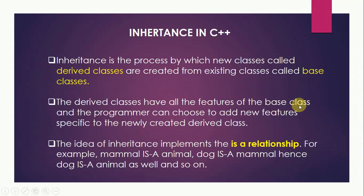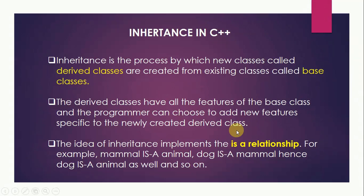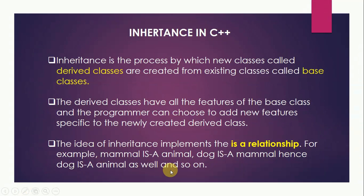The older class will have all the features and if we want to add some new features to it, we will make a derived class which will inherit the base class, using all the features of the base class, and then according to choice new features can be added to the derived class. The idea of inheritance implements the 'is-a' relationship. For example, mammal is an animal, dog is a mammal and hence dog is an animal as well. This is an 'is-a' relationship.